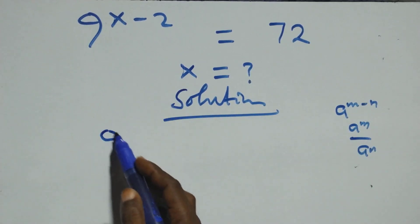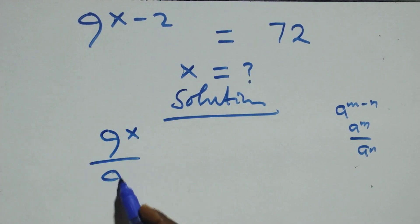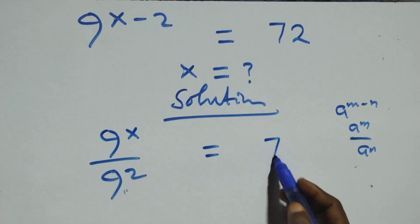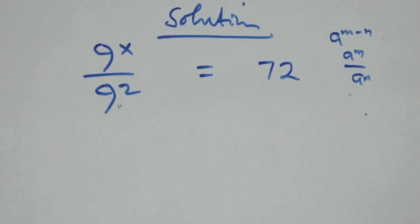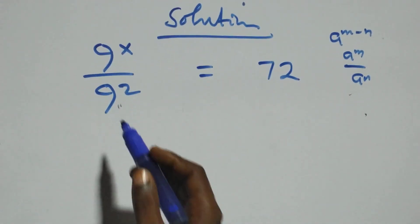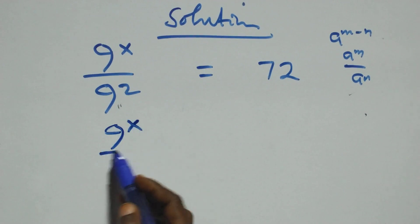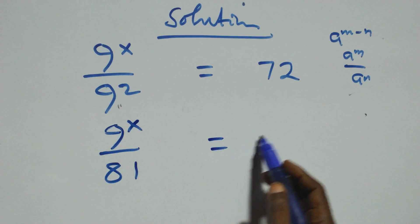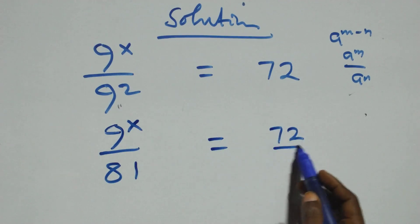We can write this as 9 raised to power x over 9 squared equals 72 on this side. This is the same thing as 9 raised to power x over 9 squared — 9 times 9, that's 81 — equals 72 over 1.